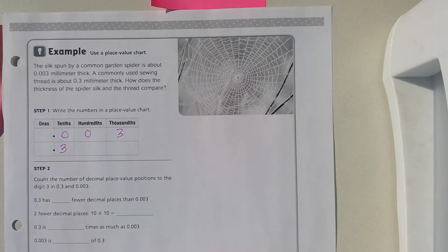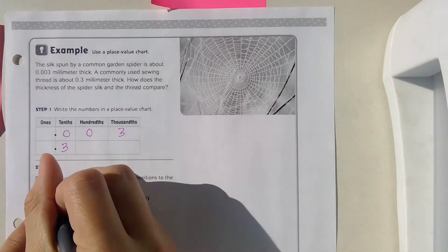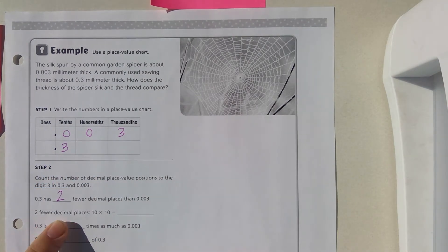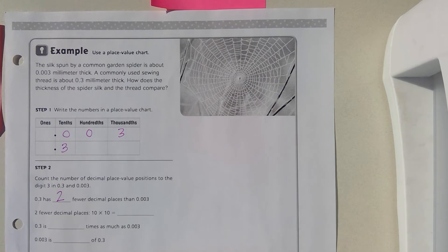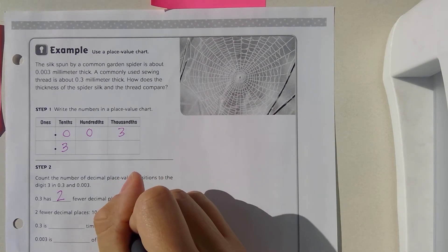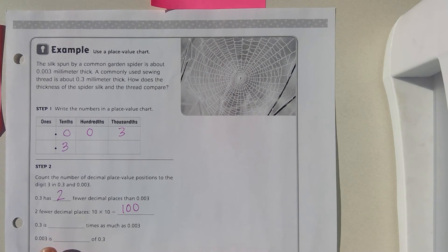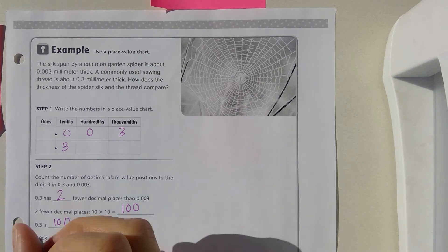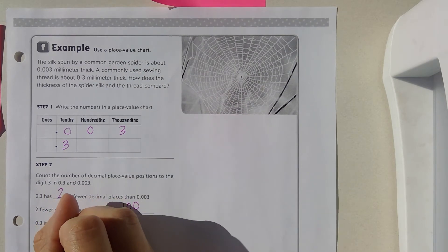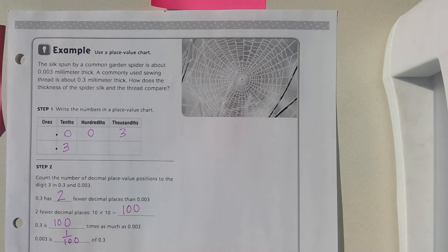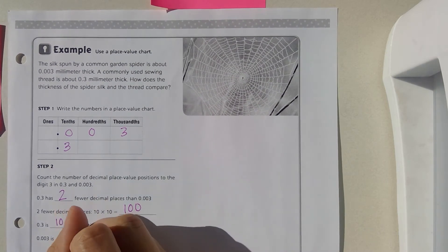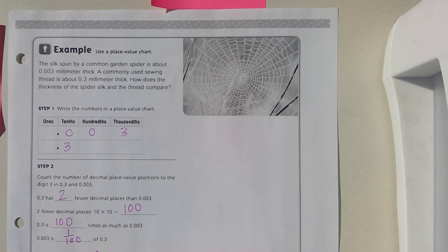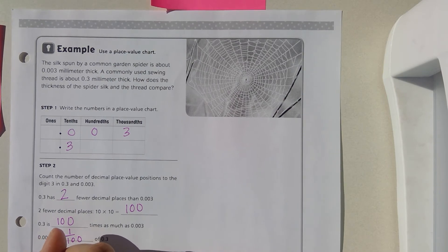When we are looking at three thousandths and three tenths, three tenths has two fewer decimal places than three thousandths. Two fewer decimal places is like 10 times 10, which is 100. So three tenths is 100 times as much as three thousandths. Three thousandths is one hundredth of three tenths. The thread is 100 times as thick as the garden spider silk. The thickness of the garden spider silk is one hundredth of the thread.